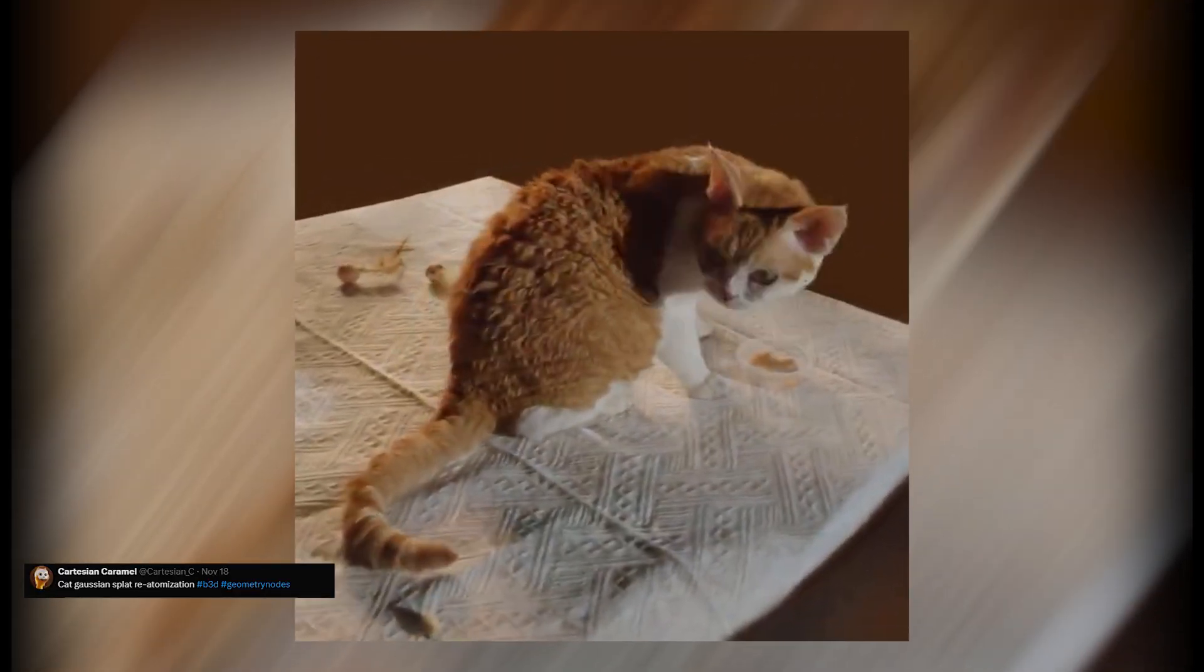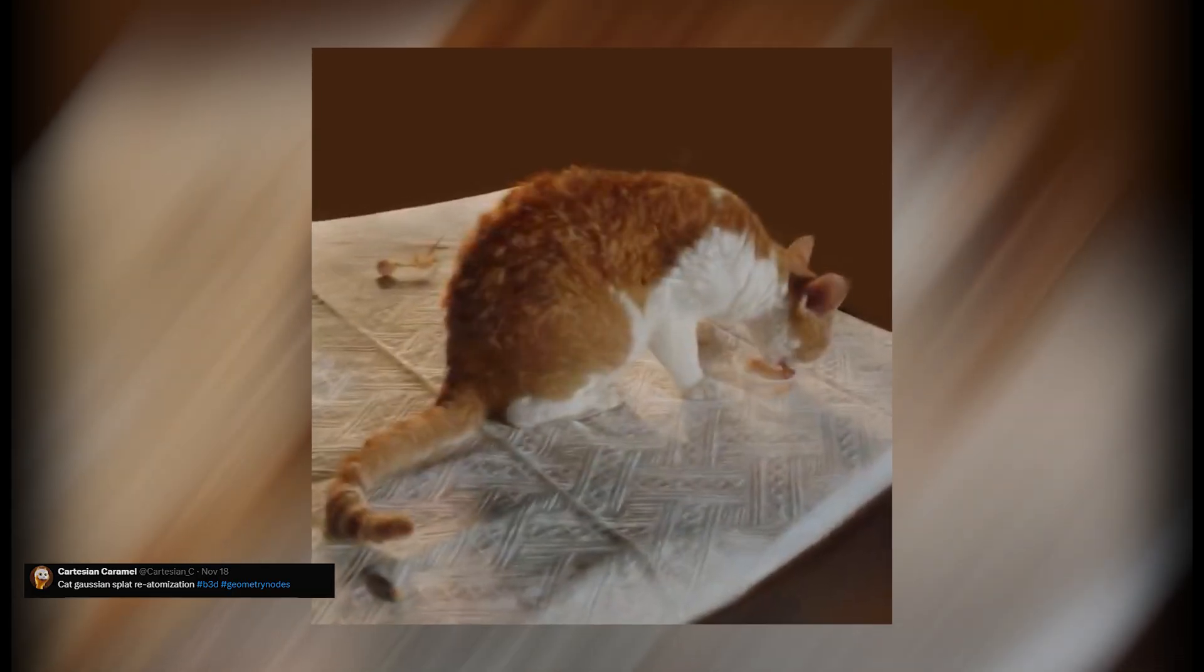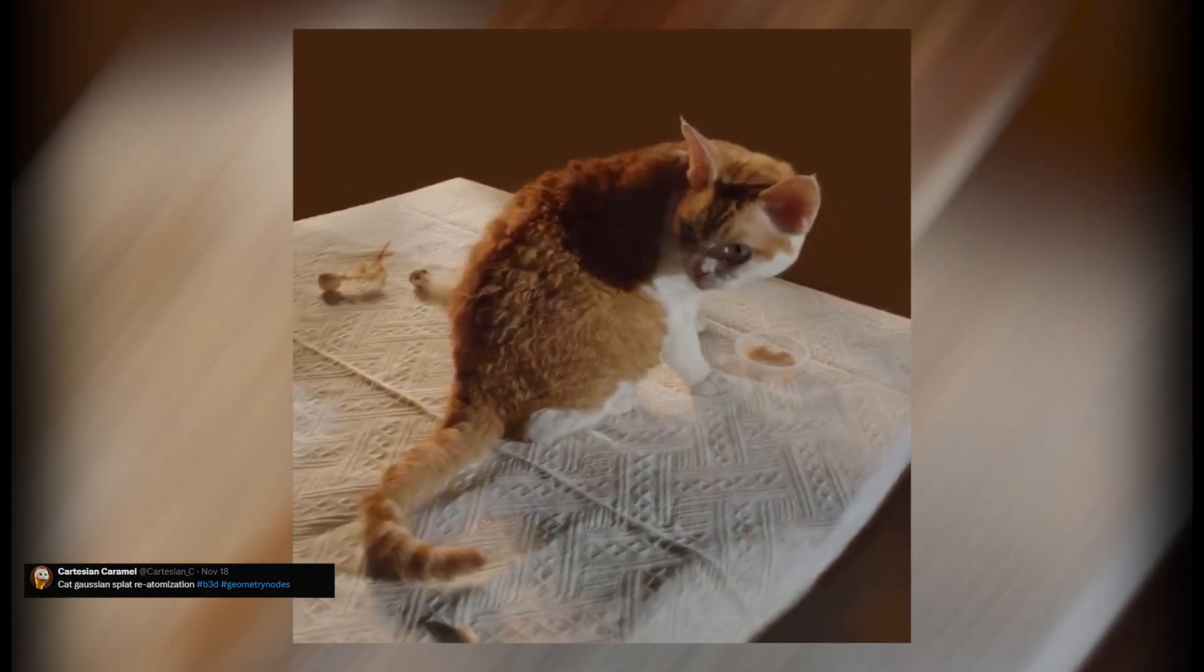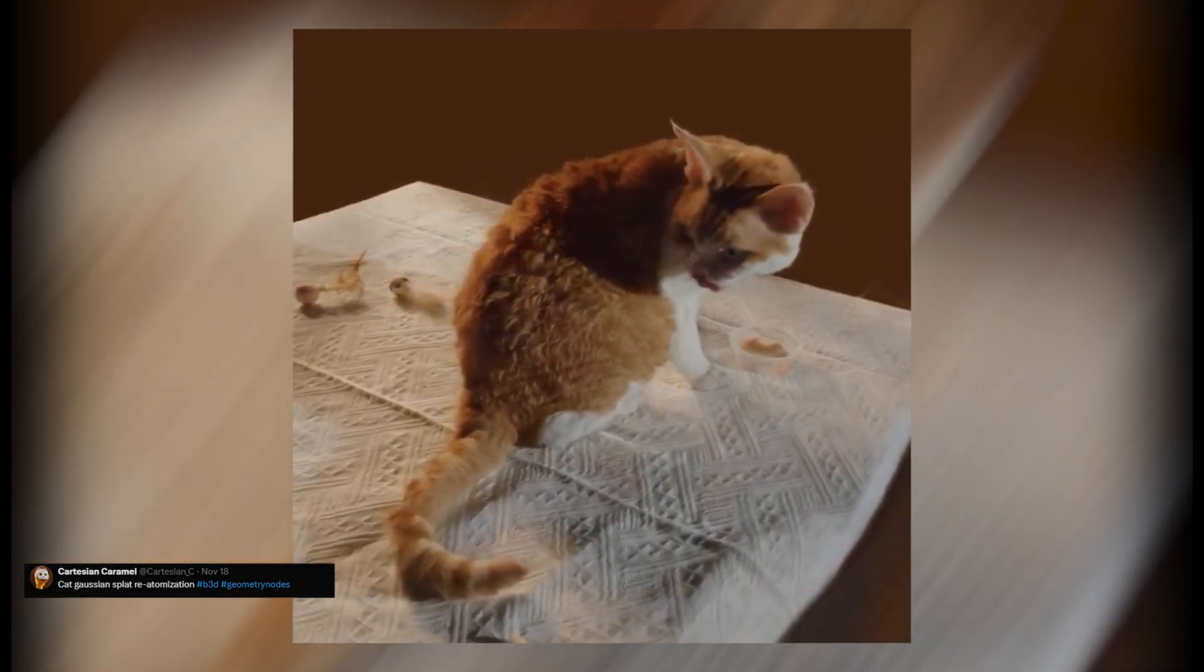Another mind-blowing trick, Gaussian Splats. I'm still shocked they haven't taken over everything. They're fast, lightweight, and in some situations more realistic than camera footage because you can move freely inside the scene. Most software doesn't support them by default, but in Blender? Cartesian Caramel showed that with just a few nodes you can render them with no problem.